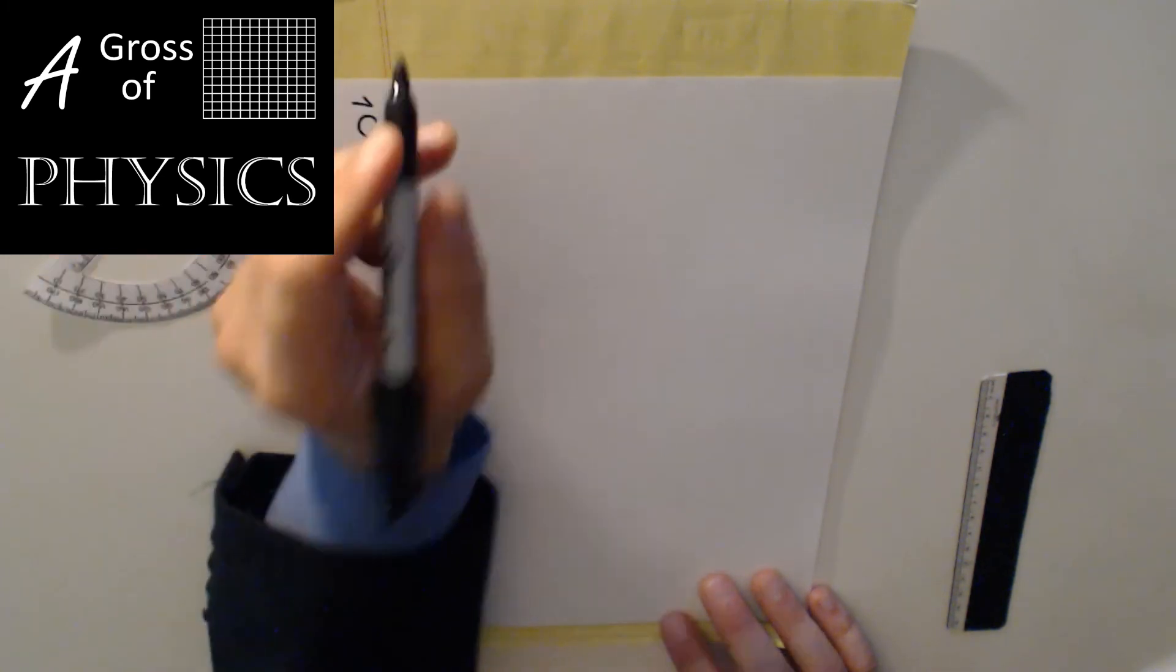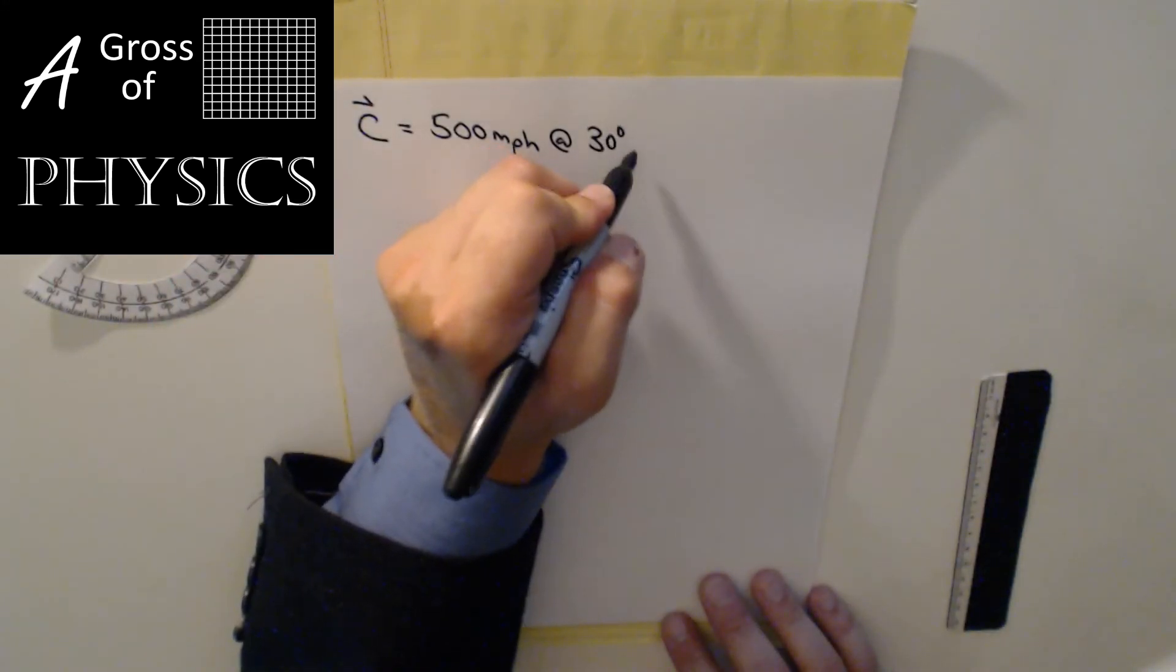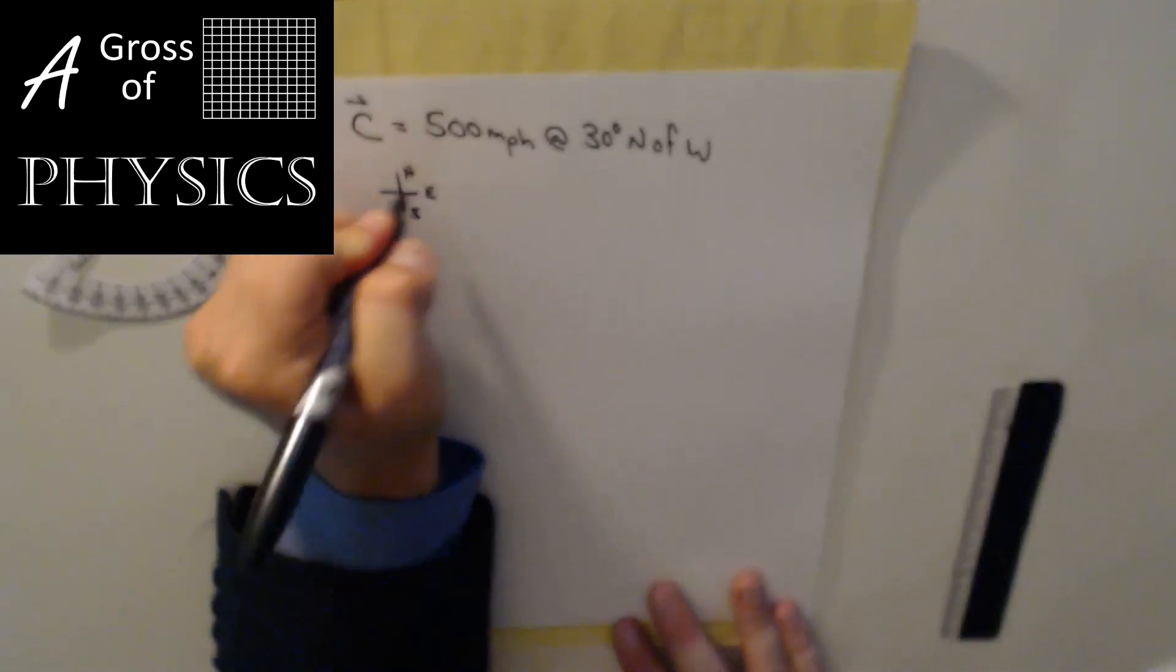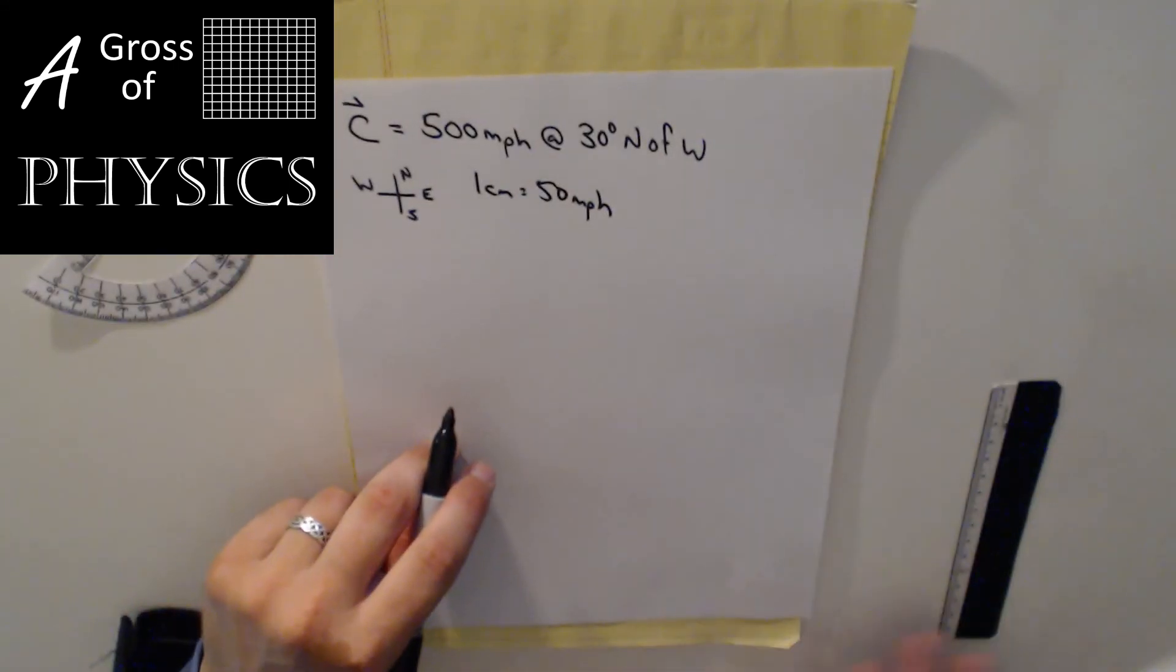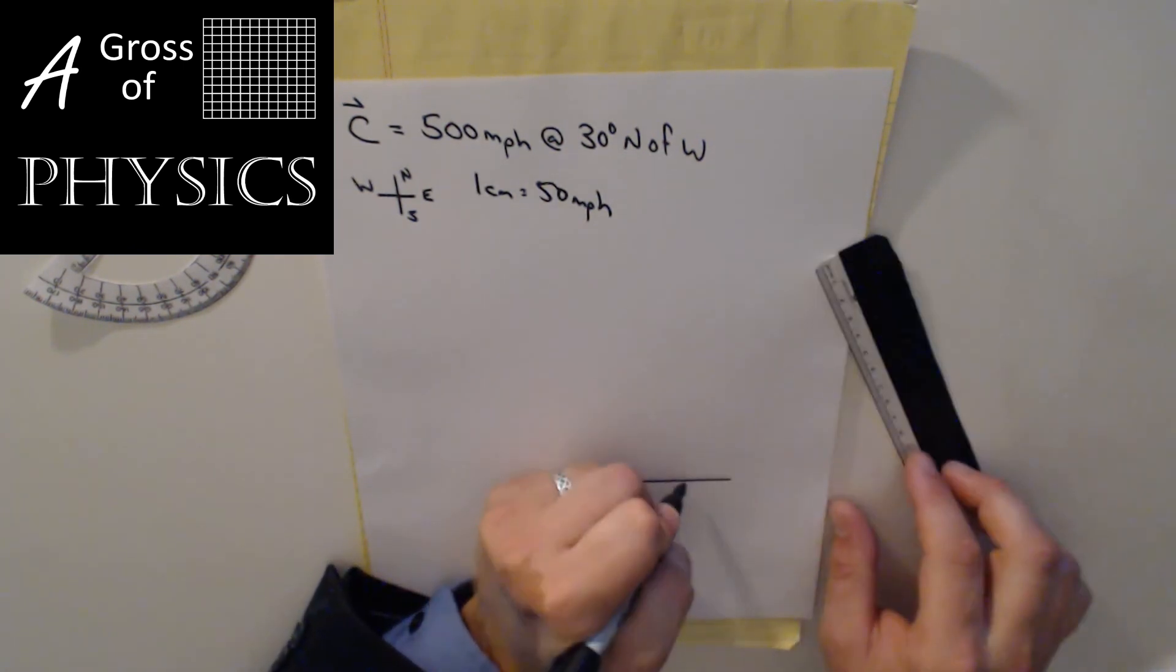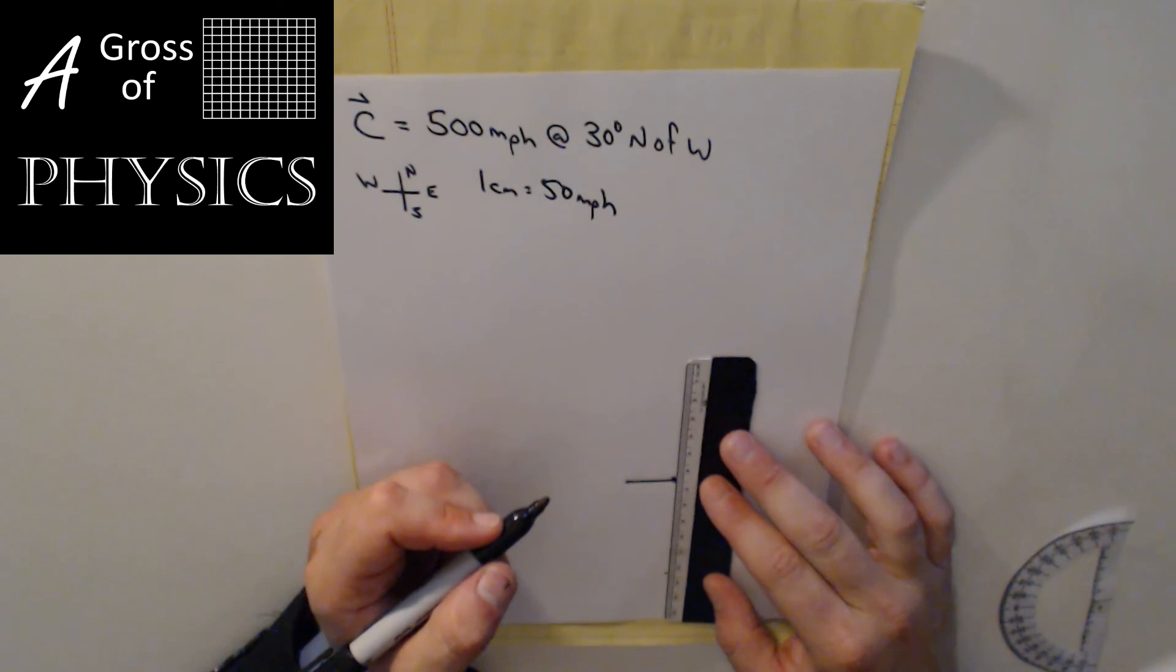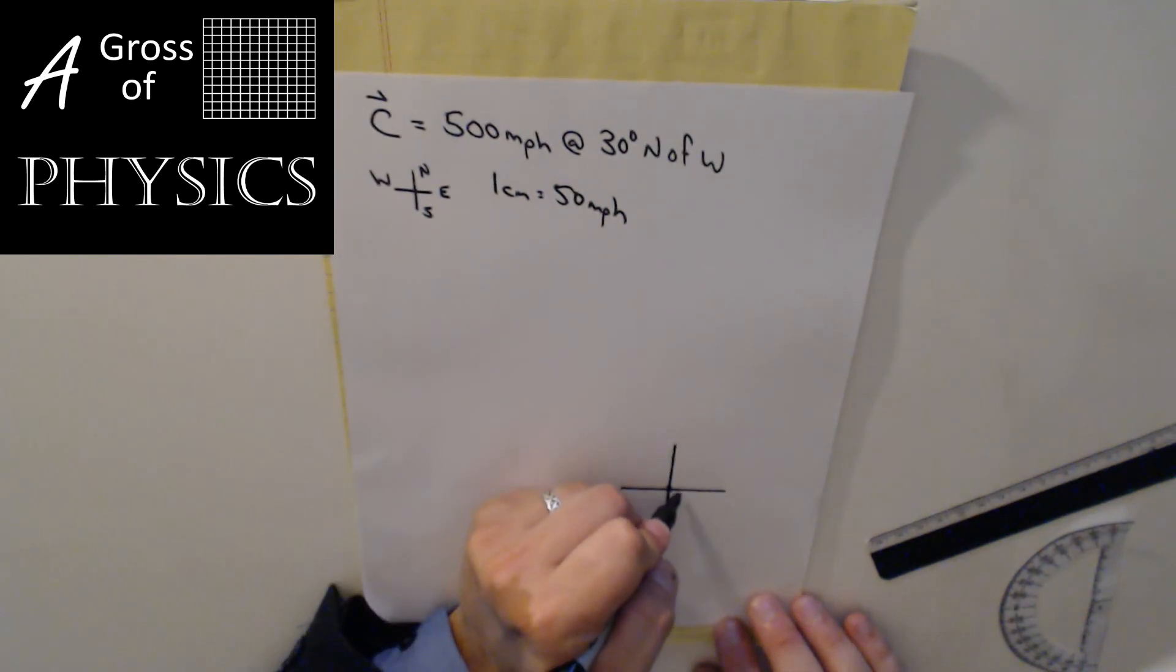Just as our final example, we have vector C, which is 500 miles per hour at 30 degrees north of west. So I'm going to be in quadrant two. Now, 500, well, first of all, it's north, south, east, west. Second of all, I'm going to do one centimeter is 50 miles per hour, because that's the constraint of my ruler. And then if I'm going to go in quadrant two, I'll start down in this area. I'll draw a single line. I'll put a dot, and I'll measure 90. And if I measure 90, I'll put a dot on the 90, use my ruler, and then draw the axis. Now, that should be perpendicular in all these quadrants there.